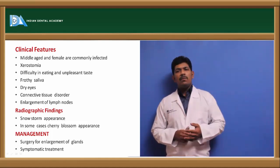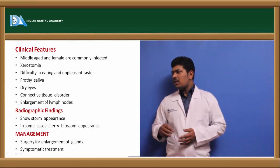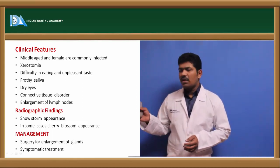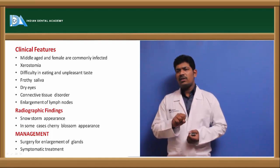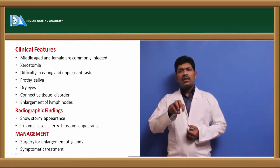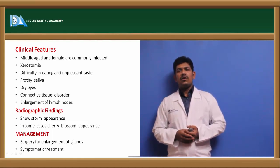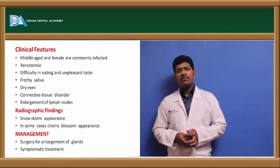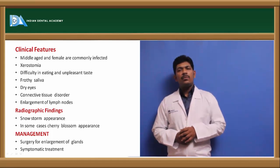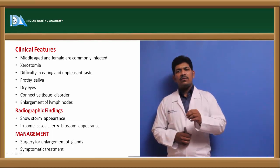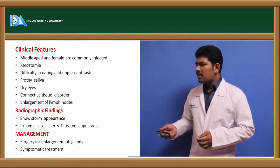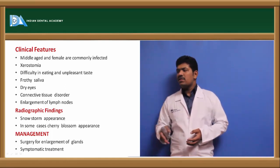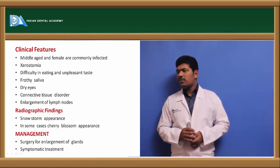Radiographically, in Sjögren's syndrome, because of destruction of parenchymal cells due to autoimmune inflammation, a 'snowstorm appearance' or 'cherry blossom appearance' is seen. On radioisotope imaging, accumulation of contrast within areas of parenchymal cell destruction produces small blobs or dots, giving the typical cherry blossom or snowstorm appearance. Management includes symptomatic treatment for xerostomia and surgery for gland enlargement.